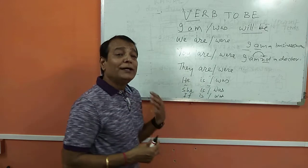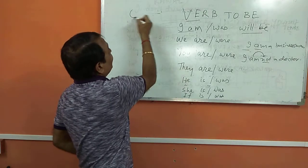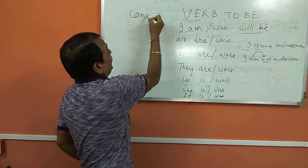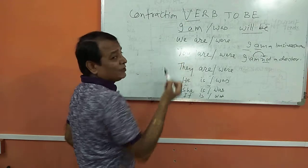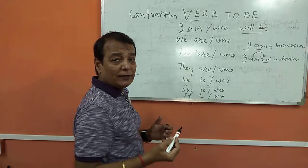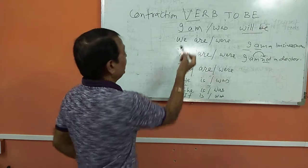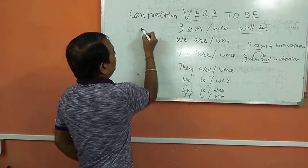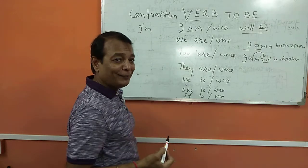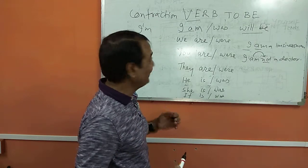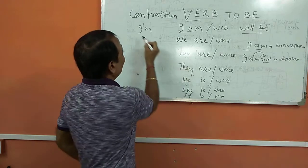Now let me go to the contraction part. What is contraction actually? Contraction is a shortened form of the word. Suppose I am writing 'I am' and you speak it as 'I'm' — I'm a businessman. That's called contraction.